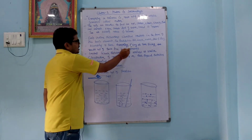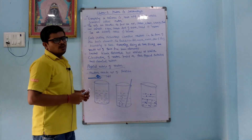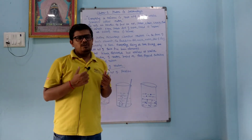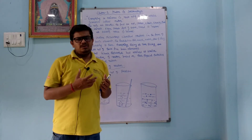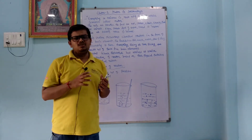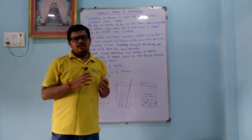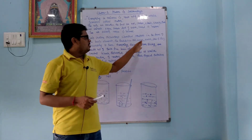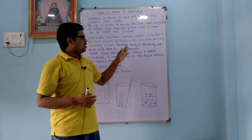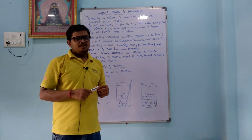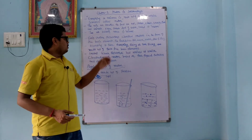According to Indian philosophers, everything — living or non-living — was made up of these five basic elements. Even in Ayurvedic medicine (BHMS), all medicines are given according to these five fundamental parts: air, earth, water, fire, and sky. The body itself is also made up of these Pancha Tattva elements.